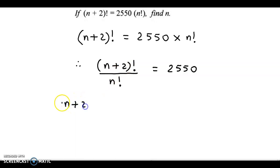So, we get (n+2). Now, if we subtract 1, this becomes (n+1). And again, if we subtract 1, we have reached n! divided by n! and that is equal to 2550.